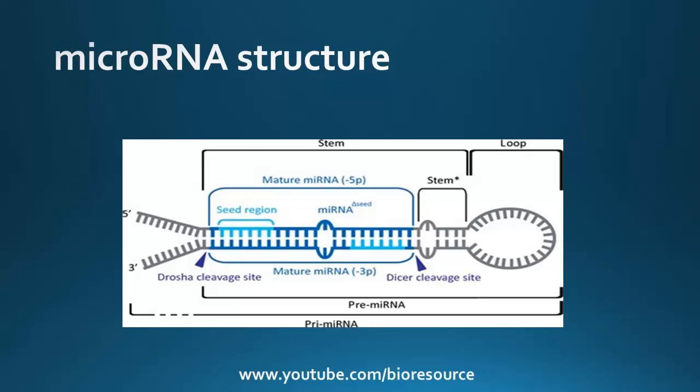This seed region has a key role in the specificity of the molecule for its target mRNA, as it binds to the 3' UTR of the messenger RNA by sequence complementarity. The rest of the miRNA sequence may also interact with the messenger RNA by complementarity in an additive way.